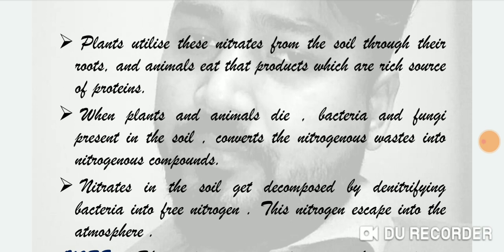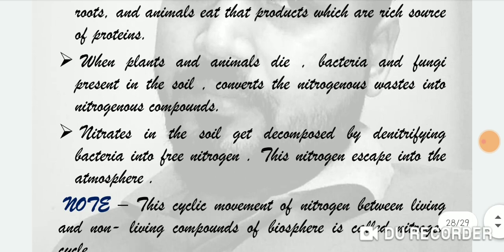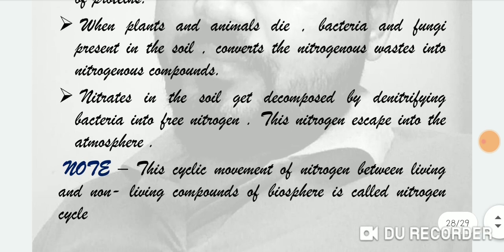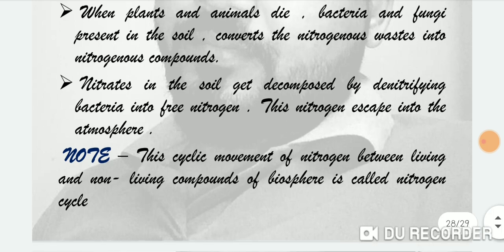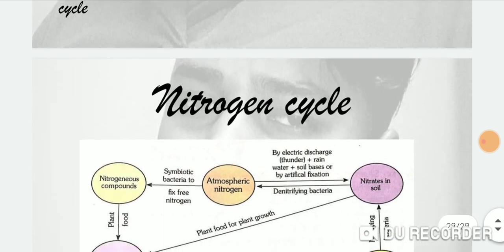Nitrates in the soil get decomposed by denitrifying bacteria into free nitrogen, which then escapes back into the atmosphere in the form of nitrogen. This process helps balance the percentage of nitrogen in the atmosphere. The cyclic movement of nitrogen between living and non-living components of the biosphere is called the nitrogen cycle.